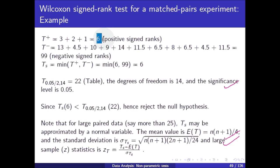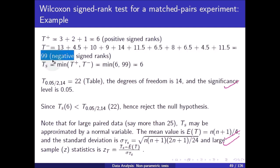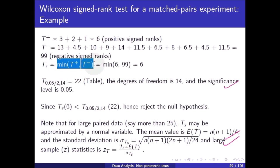The positive-signed ranks sum to T plus = 3 + 2 + 1 = 6. The remaining negative-signed ranks sum to T minus = 99. Since this is a two-tailed test, T_s equals the minimum of T plus and T minus, which is 6.